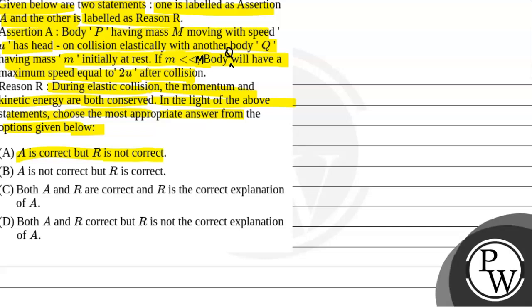Option A: Assertion is correct but Reason is not correct. Option B: Assertion is not correct but Reason is correct. Option C: Both Assertion and Reason are correct and Reason is the correct explanation of Assertion. Option D: Both Assertion and Reason are correct but Reason is not the correct explanation of Assertion.